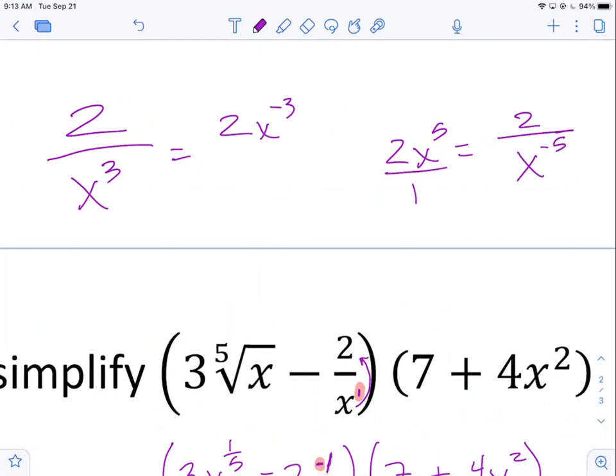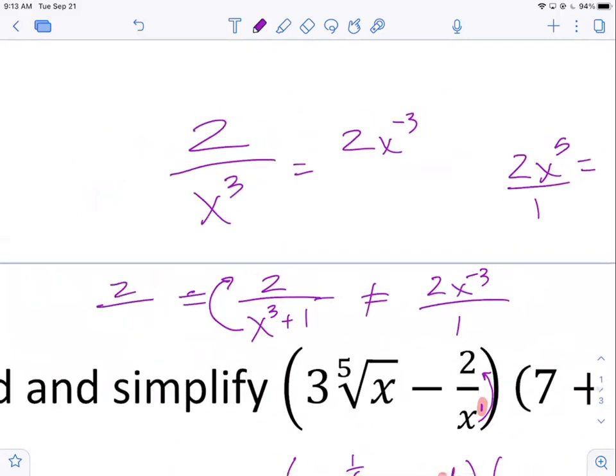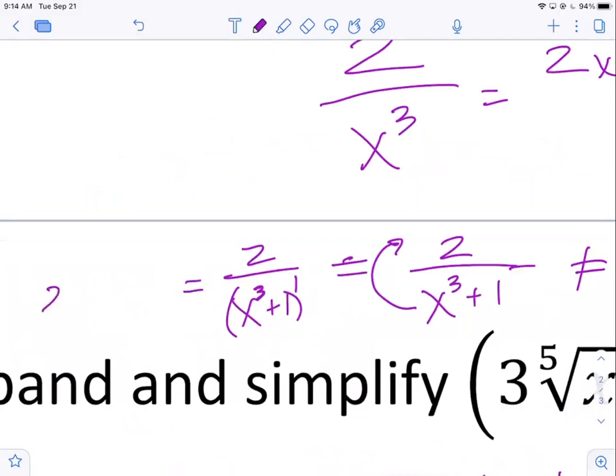But it only works with factors. So like if you had two over x cubed plus one, you can't bring that to the top like this. You can't say it's two x to the negative third over one. That doesn't work. What you could do is you could say that the whole thing, because it's more than one term, you could say the whole thing is in the bottom to the first power. And then you could say that would be two times the quantity x cubed plus one, and now the whole thing's to the negative first power. So terms don't work as well as factors, but you could turn multiple terms into a factor group.